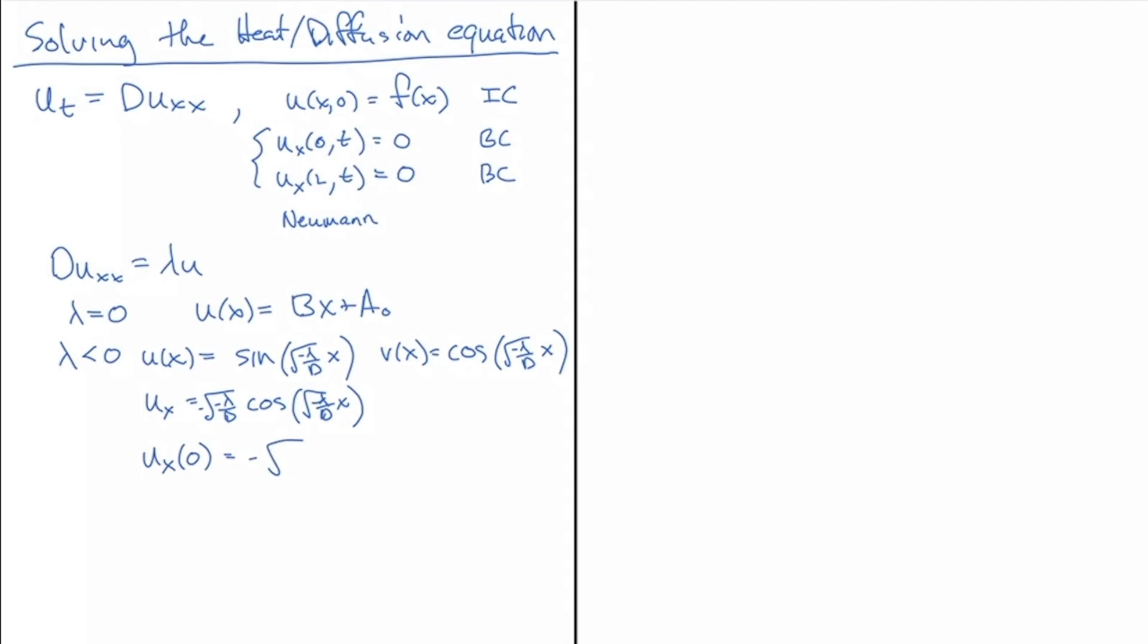I get minus square root of minus lambda over d times one, and that has to be equal to zero for a Neumann boundary condition. But that would force lambda to be equal to zero, and we're dealing with the lambda negative case.